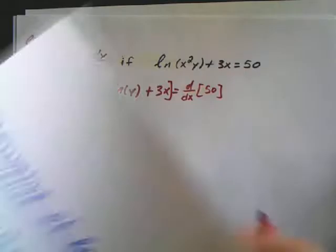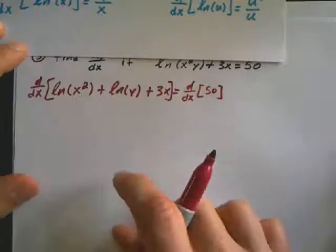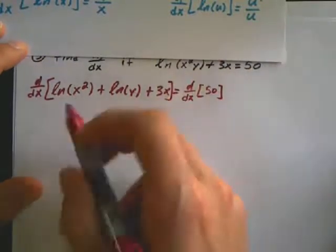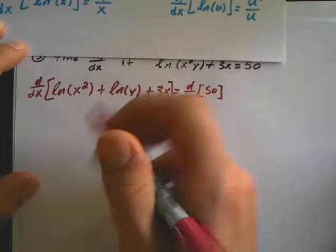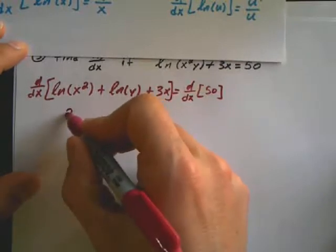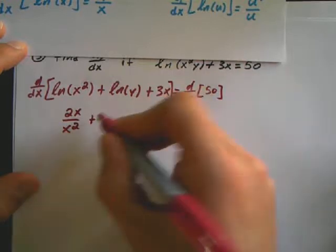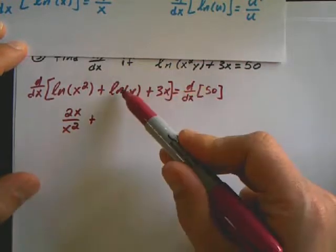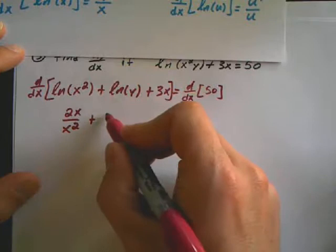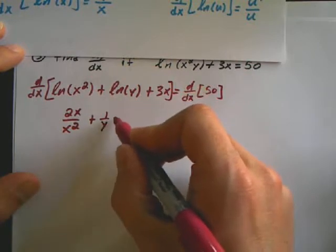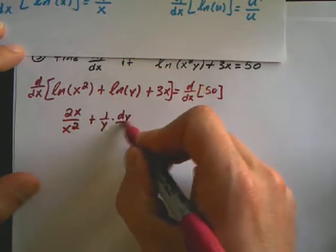So derivative property, the derivative says u prime over u. So this is going to be 2x over x squared. Plus the derivative of ln of y is going to be 1 over y. Because it's implicit, it's going to be times dy/dx.